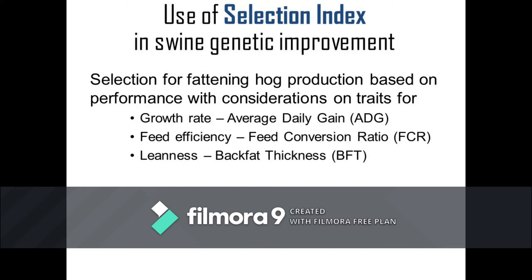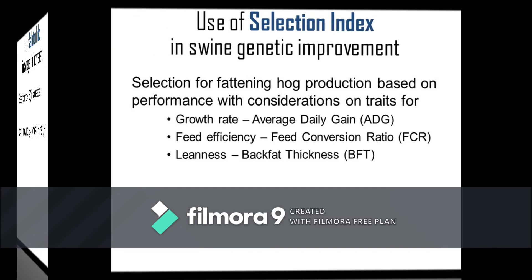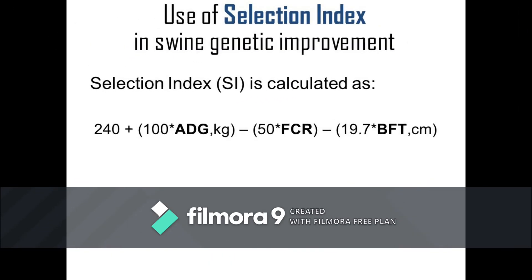Growth rate, feed efficiency, and back fat are correlated such that fast-growing lean animals are more efficient. Using ADG, FCR, and BFT as the animal performance parameters, selection index score is calculated as: 240 plus the product of 100 and ADG in kilograms, minus the product of 50 and FCR, minus the product of 19.7 and BFT in centimeters.